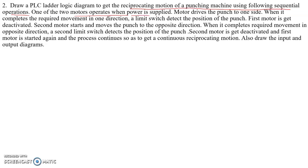Motor number one operates when power is supplied. Motor one drives the punch to one side, the downward side. When it completes the required movement in one direction, a limit switch detects the position of the punch. The first motor is then deactivated and the second motor starts, moving the punch to the opposite, upward direction.